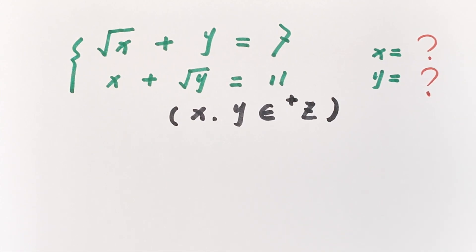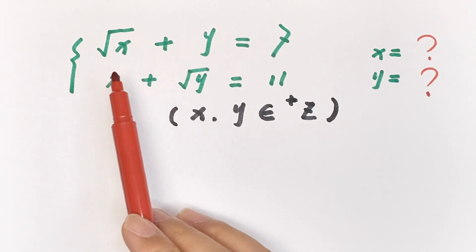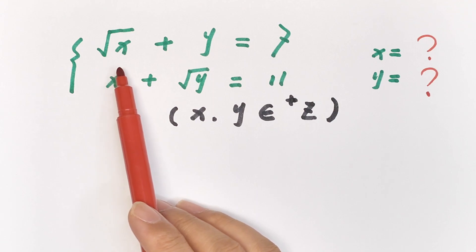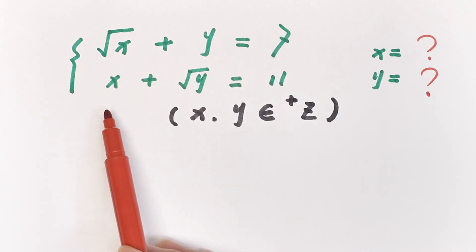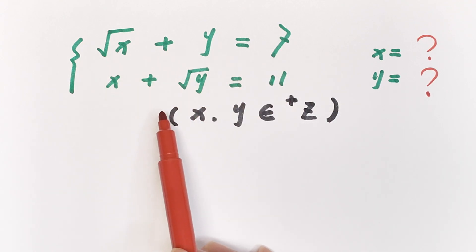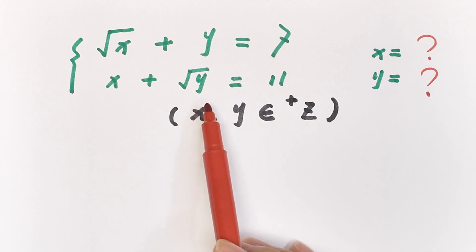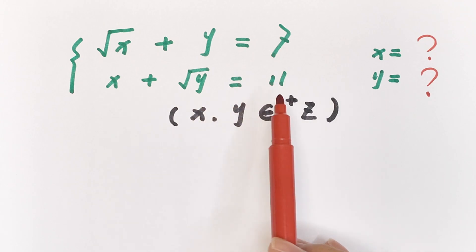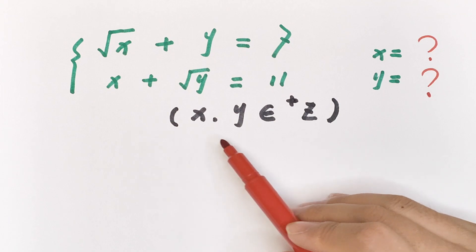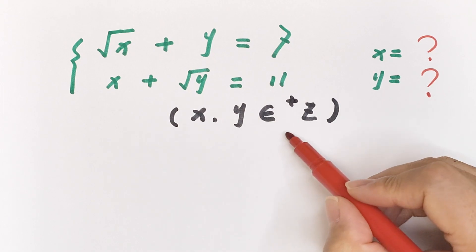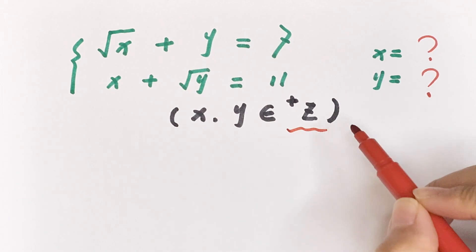Hello everyone, welcome to Math4U. How to solve: square root of x plus y equals 7, and x plus square root of y equals 11, where x and y are positive integers. We need to find the values of x and y.